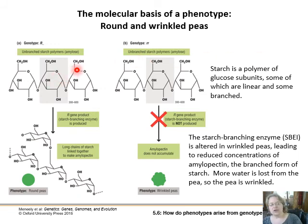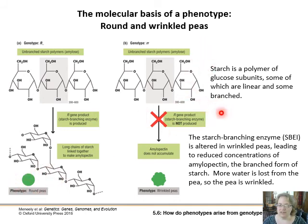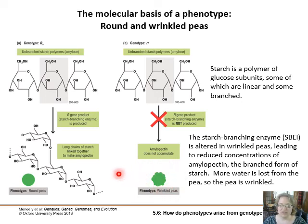Going back a bit — when we talk about alleles and where phenotypes come from, we go all the way back to how enzymes function. Looking at round peas, there's an enzyme that helps branch starch molecules so they get big and puffy, making amylopectin, which accumulates in the peas and puffs them up into nice round peas. In the wrinkled gene, you have a broken starch branching enzyme — a nonsense mutation with a non-functional enzyme — so starch doesn't accumulate and you get wrinkled peas. All these phenotypes go back to what DNA is coding for: what enzymes are made and what's happening in gene expression in the cell.